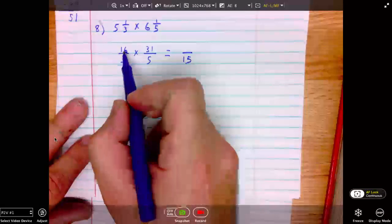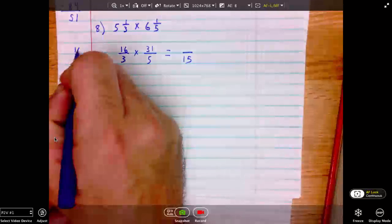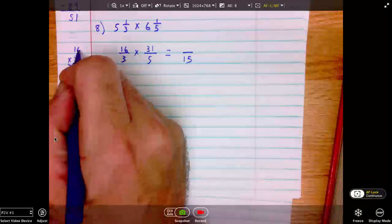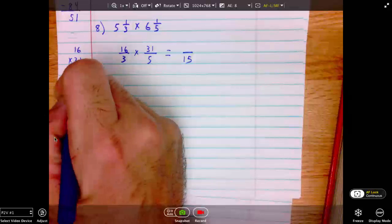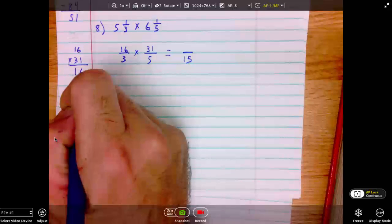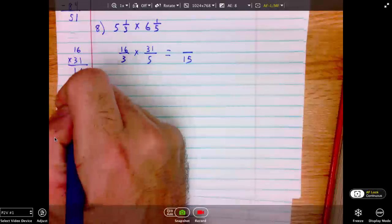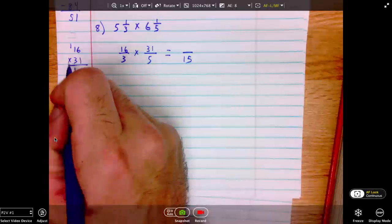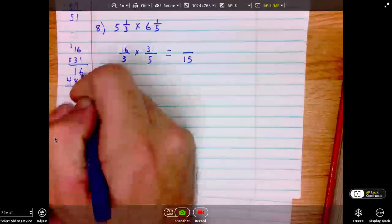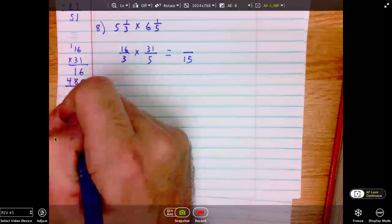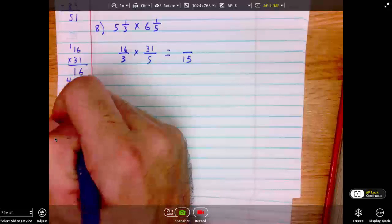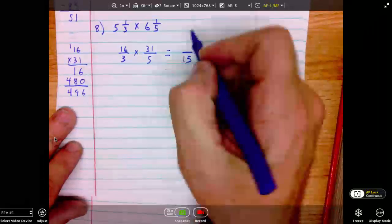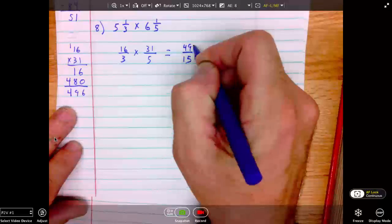3 times 5 is 15 in the denominator. Now, multiplying 16 times 31. 1 times 6 is 6. 1 times 1 is 1. 0 for a placeholder. 3 times 6 is 18. Carry my 1. 3 times 1 is 3 plus 1 is 4. Summing 6, 9, 4. 496 is my numerator.